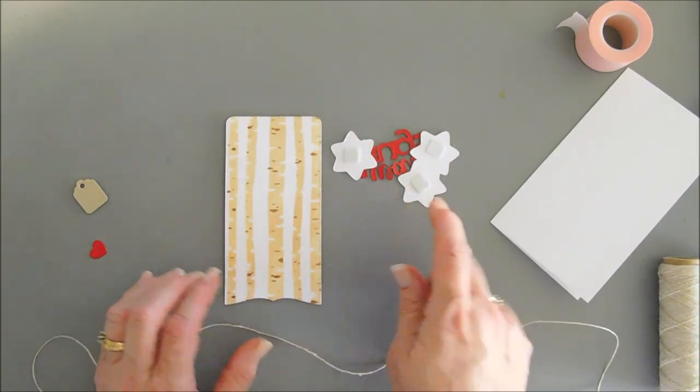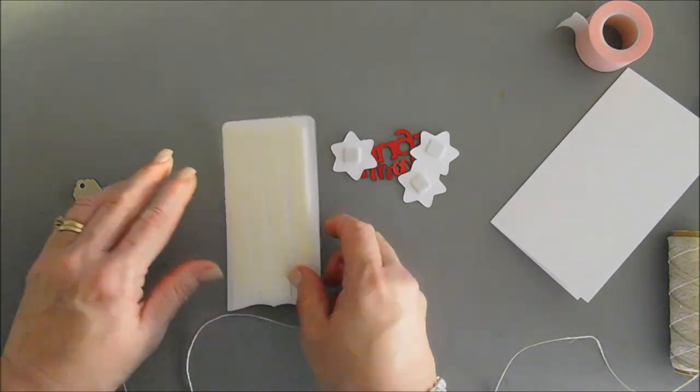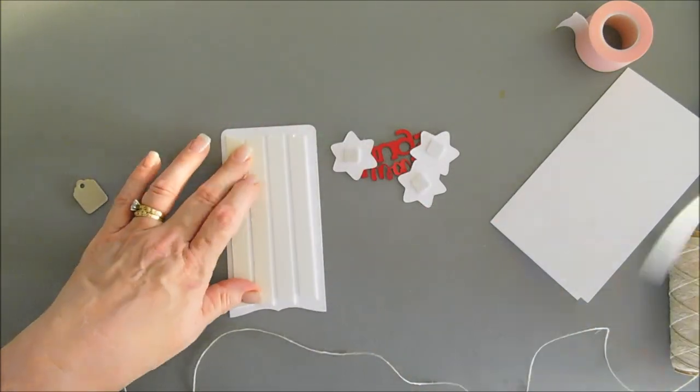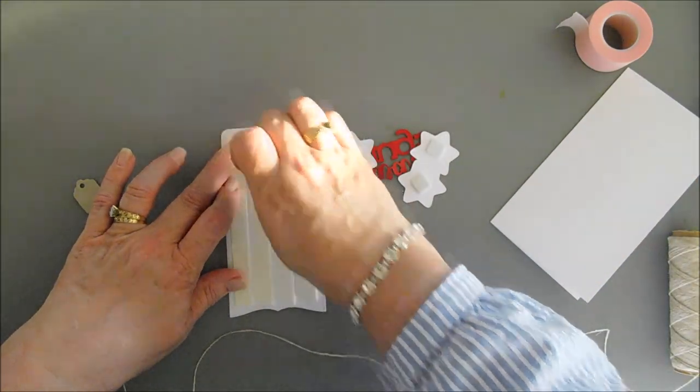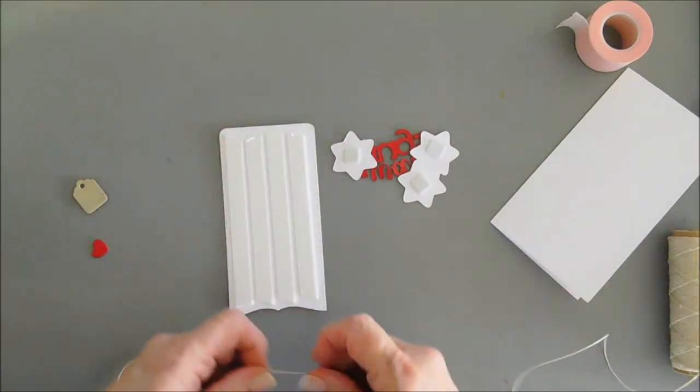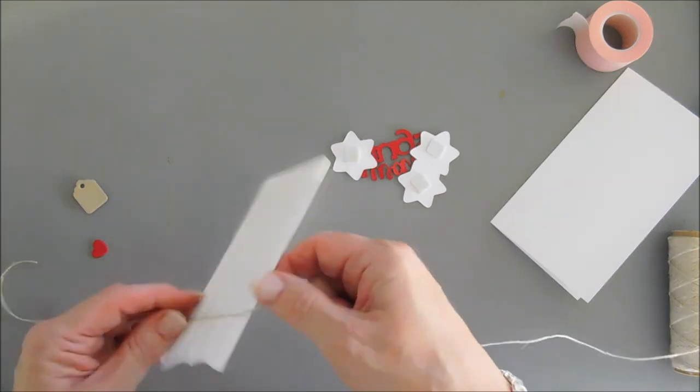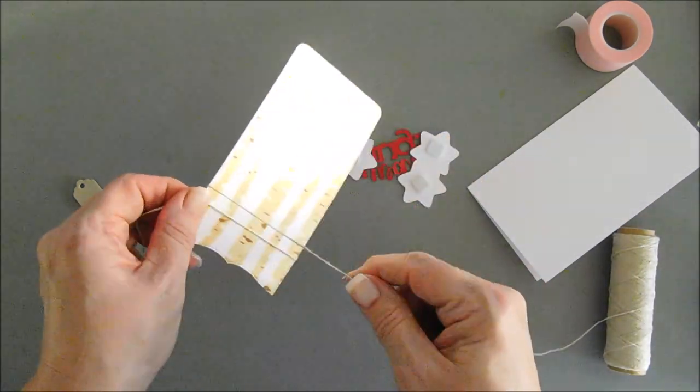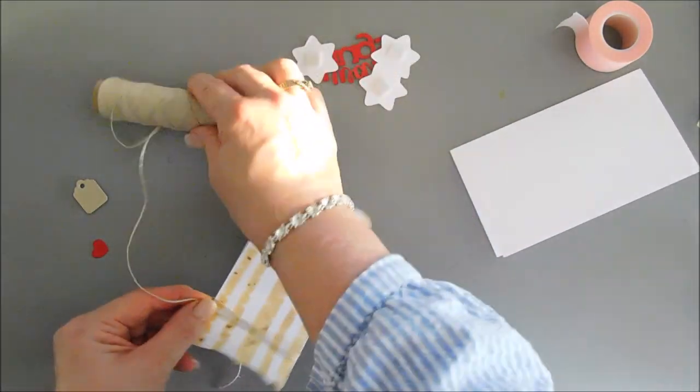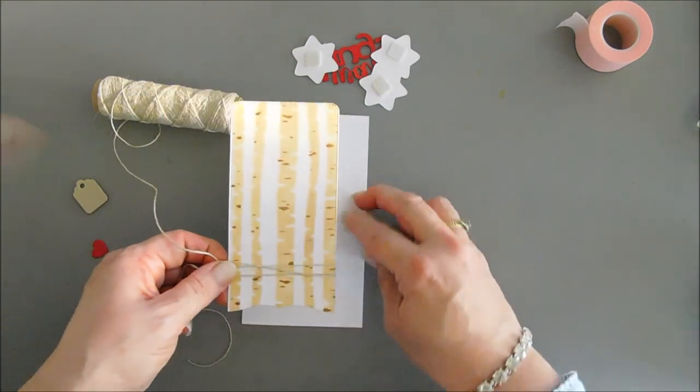I do want to bring in some natural twine. I already put foam adhesive behind my panel, so we're going to remove the release paper. I'm going to add my twine and wrap it around a couple times, kind of crisscrossing a little bit. I think that's going to work out great, and then I'm going to tack this down to my card base.